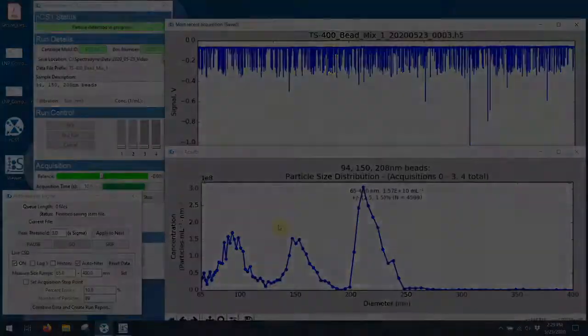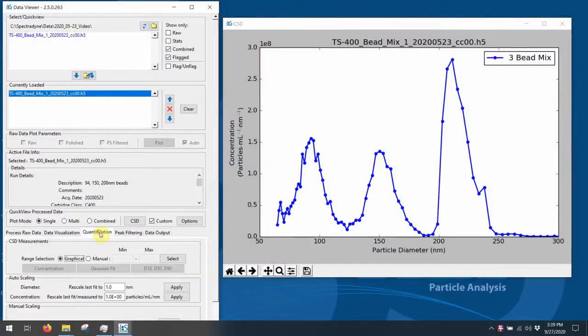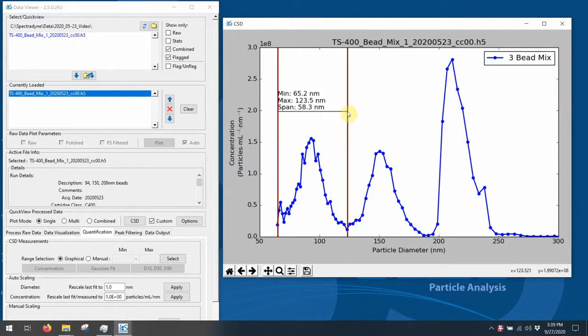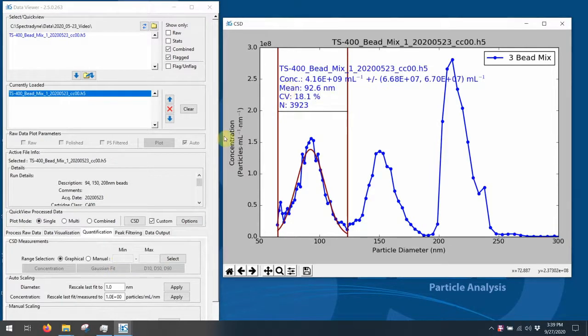Once the live data has been saved, we can bring it up in the viewer software to interrogate the data, make reports, etc. Here I've defined a region where the 94 nanometer particles are, and I can click on Gaussian and find out that the system measured them as being 92.6 nanometers with a concentration of 4 times 10 to the 9th particles per milliliter. I can do the same with the 150 nanometer beads, again just outlining it and fitting a Gaussian to it.